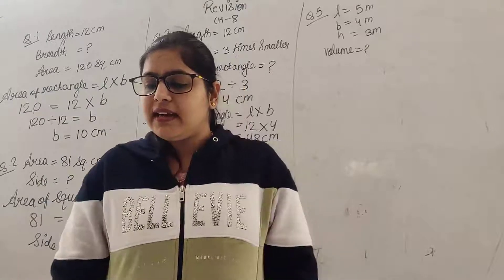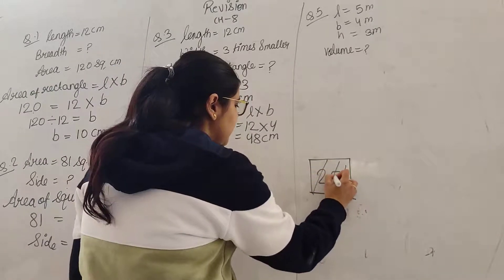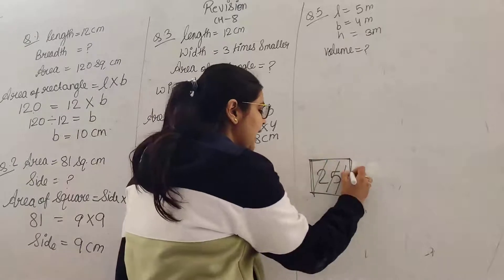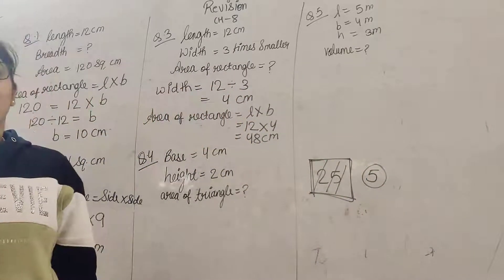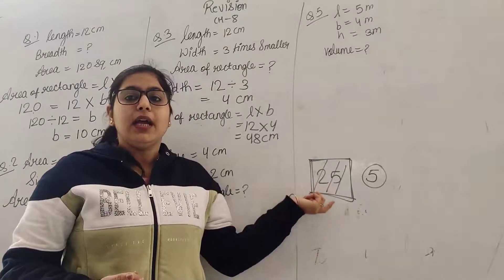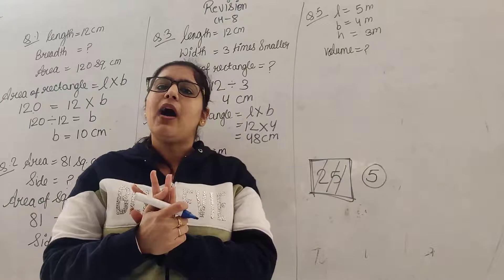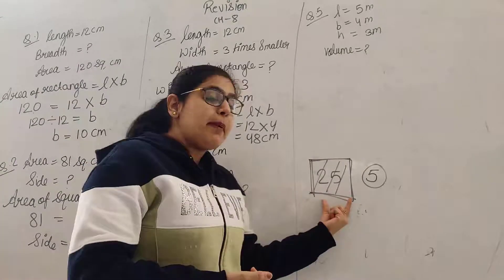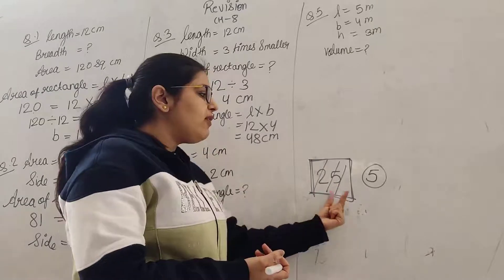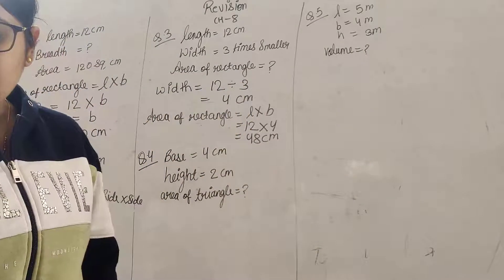एक और word problem है. The area of a rectangle is 25 square centimeter — 1 square का area है 25 cm². Question पूछ रहा है: what is the area of 5 such squares? जब 1 square का area 25 है, तो 5 squares का कितना होगा? जैसे 1 chocolate की price 25 रुपीज है तो 5 chocolates की price के लिए multiply करोगे — ऐसे ही 25 को 5 से multiply करोगे और आपको आपका answer मिल जाएगा.